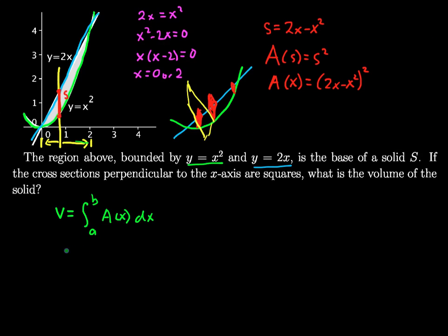I'm going to use this down here. Let's bring it all together to see that the volume of this weird shape will be equal to the integral, since I'm going along x's, cutting along x's, from 0 to 2 of my area function in terms of x, which is (2x minus x squared) squared, dx.